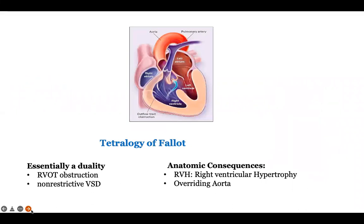What are the components of Tetralogy of Fallot? As the name suggests there are four things, but essentially it is a duality. The two most important components are right ventricular outflow tract obstruction — in the form of pulmonary stenosis or pulmonary atresia — and a non-restrictive VSD. The RVOTO causes right ventricular hypertrophy, and because the pulmonary artery is narrow, the aorta comes to overlie the VSD and receives blood from both ventricles — that is the fourth component, overriding of the aorta.